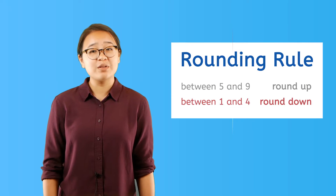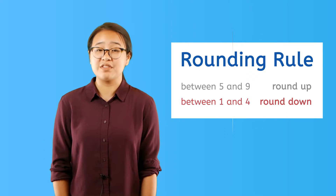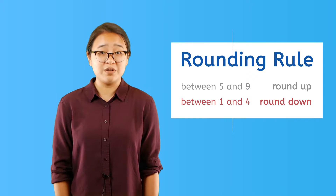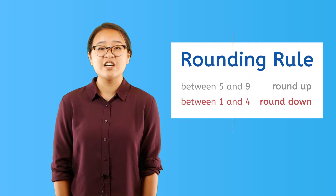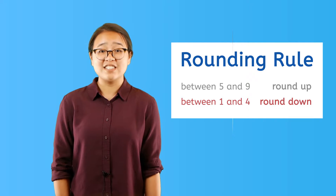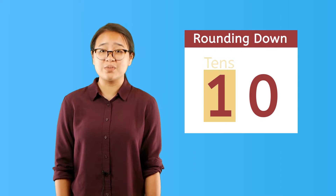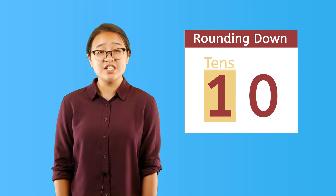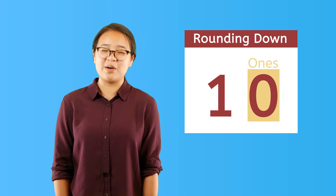If you remember the rounding rule, when the digit to the right of the given place value is between 1 and 4, or less than 5, we round down. The place value — tens — remains the same, and the digit that follows in the ones place becomes 0.